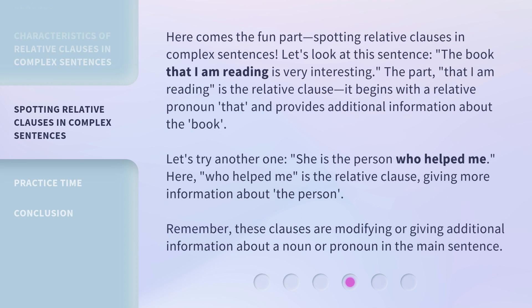Here comes the fun part — spotting relative clauses in complex sentences. Let's look at this sentence: 'The book that I am reading is very interesting.' The part 'that I am reading' is the relative clause. It begins with a relative pronoun 'that' and provides additional information about the book. Similarly, 'who helped me' is a relative clause giving more information about the person. Remember, these clauses are modifying or giving additional information about a noun or pronoun in the main sentence.